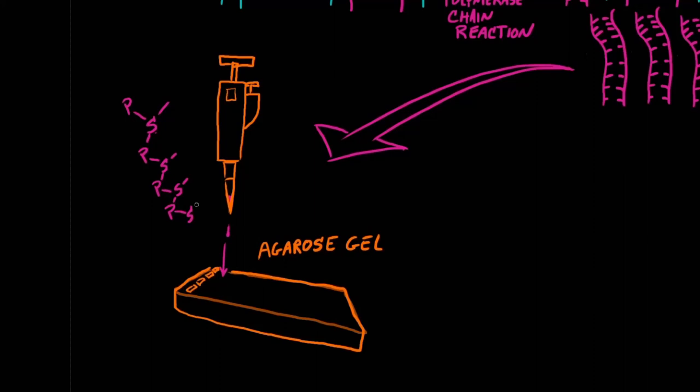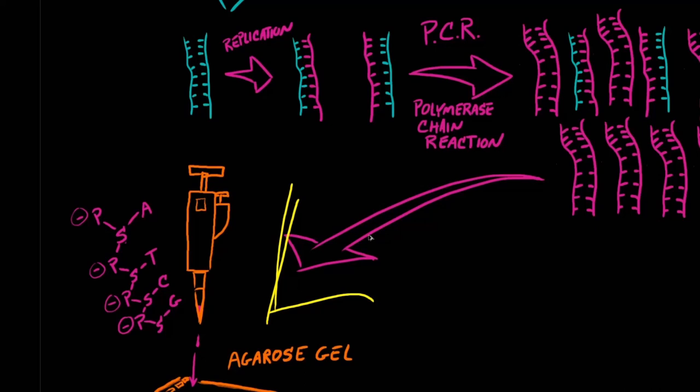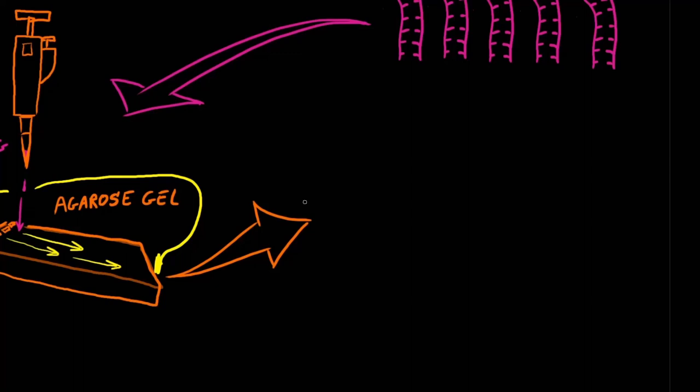You may remember from way back in unit 1 that if you put two negative charges next to each other, they repel. If you put a negative and a positive charge next to each other, they attract. So we apply a current through this gel. We attach it to a power source, put the negative end over near where the DNA was loaded, and we put the positive end on the opposite side of the gel. The DNA will be attracted to the positive side, so it will begin moving through the gel.